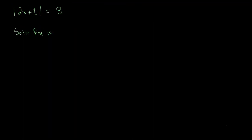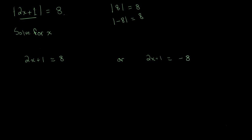In some cases we might be asked to solve for x. Here we have the absolute value of 2x plus 1 equals 8. When solving for x inside an absolute value, there are two possibilities: the expression inside was already positive, or it was negative and we changed the sign. So we get two cases: 2x plus 1 equals 8, or 2x plus 1 equals negative 8.